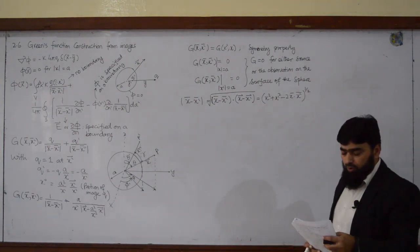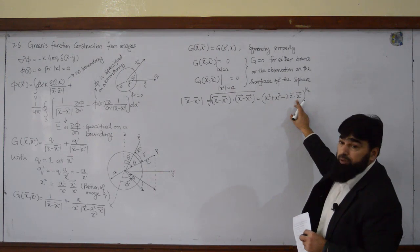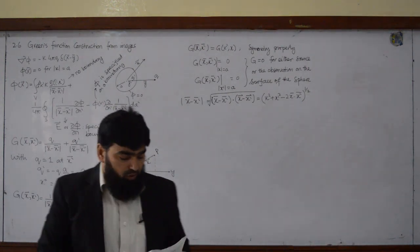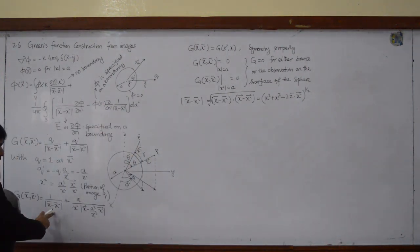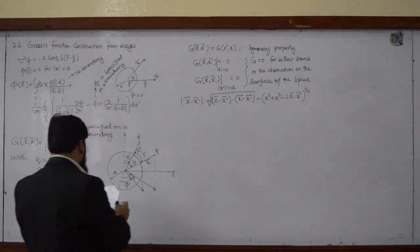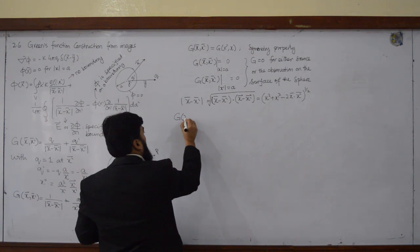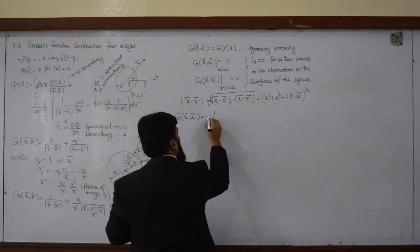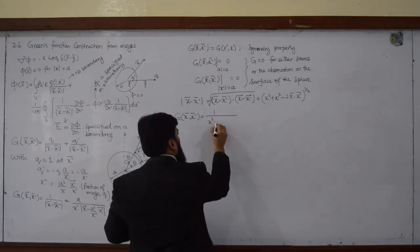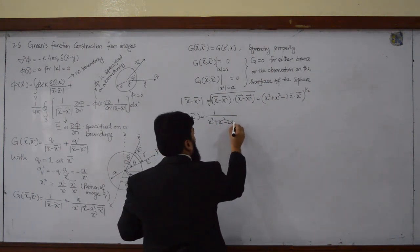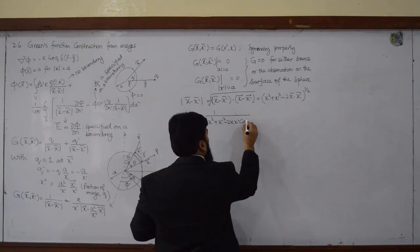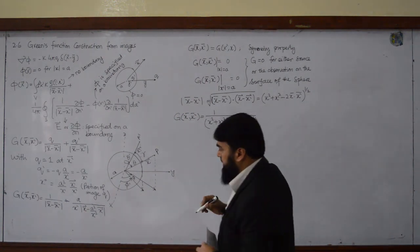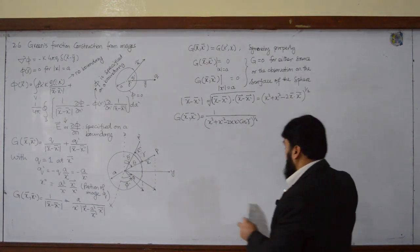Now, what about x dot x prime? The angle between x and x prime is gamma, so this will come out to be cos(gamma). So now I can write by this expression that 1 over |x minus x prime| is equal to 1 over the square root of x squared plus x prime squared minus 2 x x prime cos(gamma).